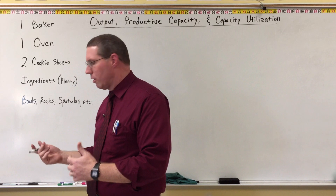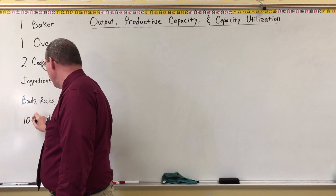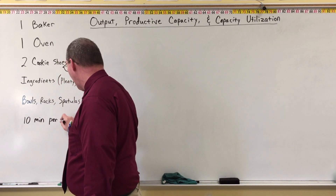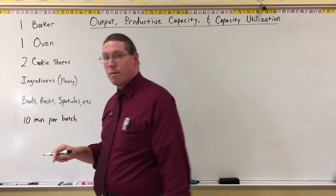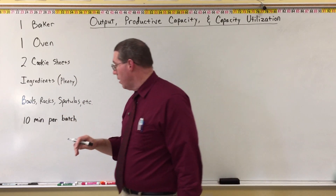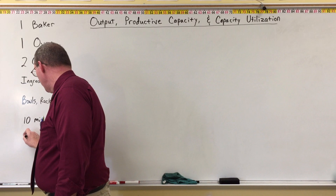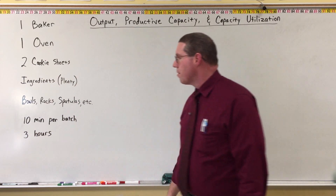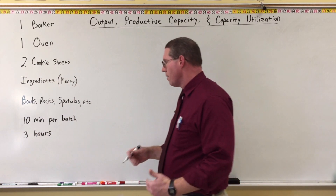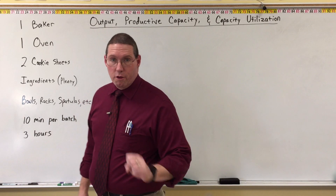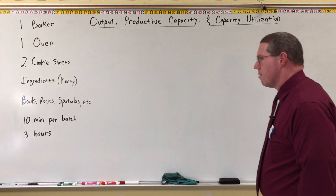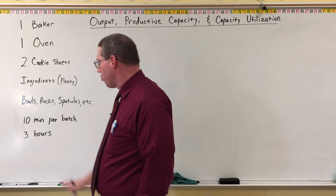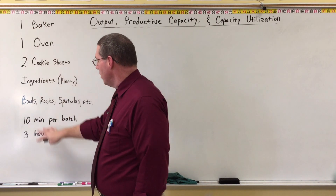On one particular day, first I want to tell you that it takes ten minutes to bake the cookies per batch — so each batch takes ten minutes of baking. And then lastly, on this particular day, this person has three hours — let's say they did a bunch of prep work in advance — they have three hours to bake the cookies. So the question here is: how many cookies can they bake in three hours given these limitations?